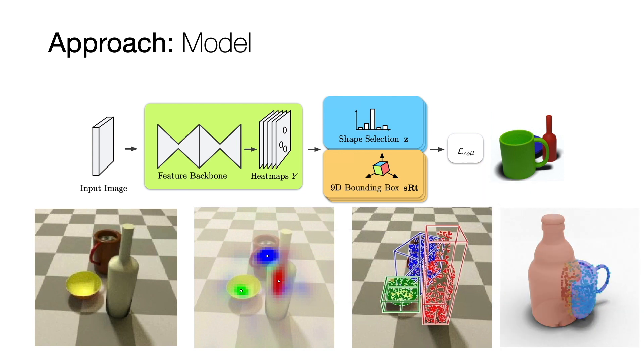A dedicated collision loss favors non-intersecting objects and thus supports realistic and physically plausible reconstructions.